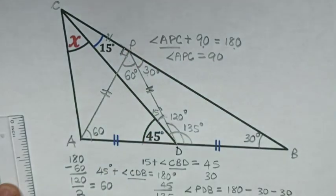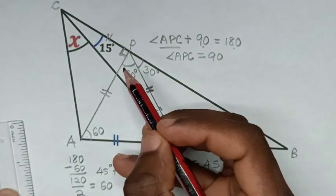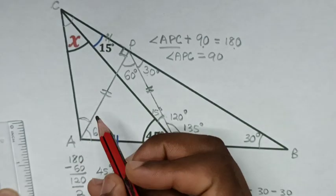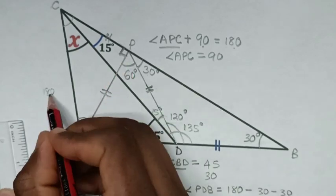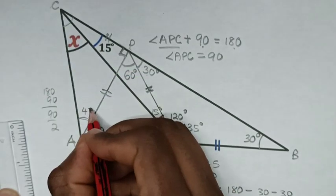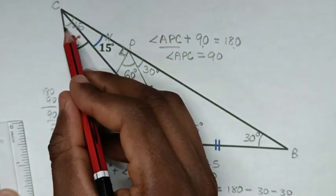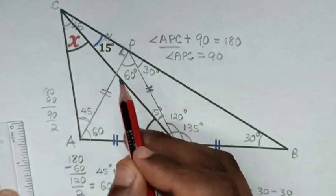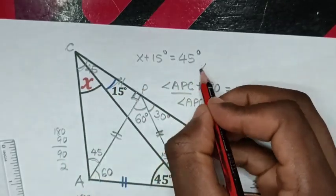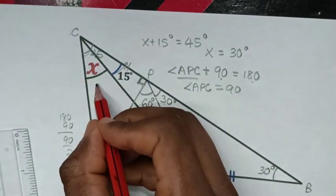Then in the next step, from this triangle, since this line is the same as this line, this angle is the same as this angle. So 180 minus 90 is 90 degrees, and dividing by 2 gives 45 degrees each. Because this angle is 45 degrees which equals x plus 15 degrees, we get x plus 15 equals 45, therefore x equals 45 minus 15 equals 30 degrees.